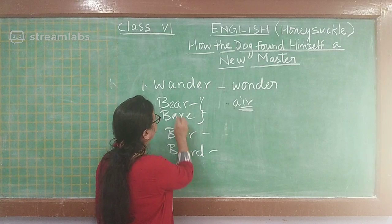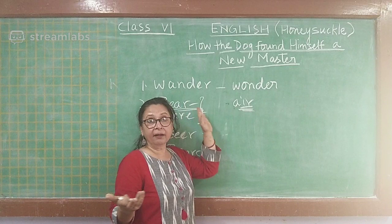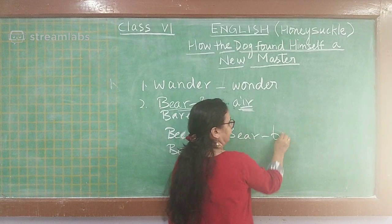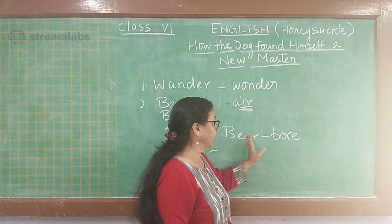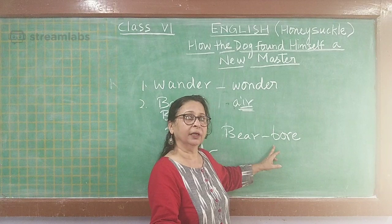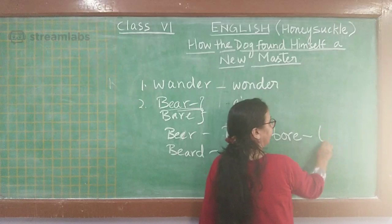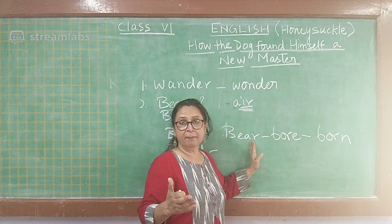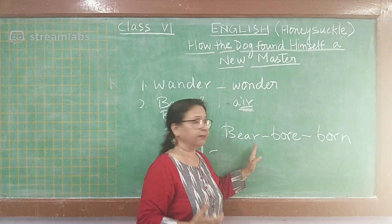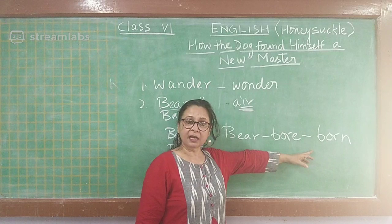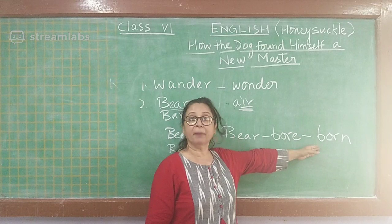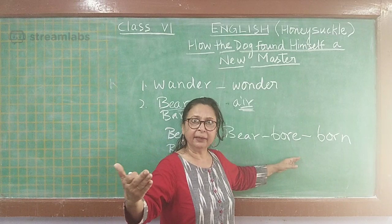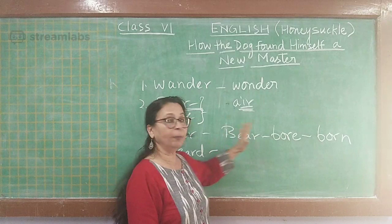Now let us look at meanings. 'Bear' as a noun means the animal. As a verb, the past tense is 'bore' and the third form (past participle) is 'born.' For example: 'I bear many grudges' or 'I bear many things patiently.' The third form is used with past participle. I hope you have some idea of past, present, and future tenses from primary — we are going to revise that again.